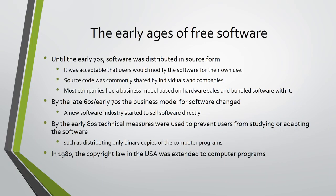Up until the early 70s, software was distributed in source form, and it was acceptable that users would modify the software for their own use. Source code was commonly shared by individuals and companies, often as public domain software. Most companies had a business model based on hardware sales and bundled software with it. They also welcomed software by others, as it made their hardware useful.